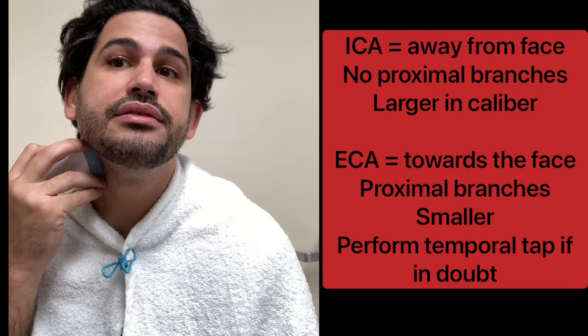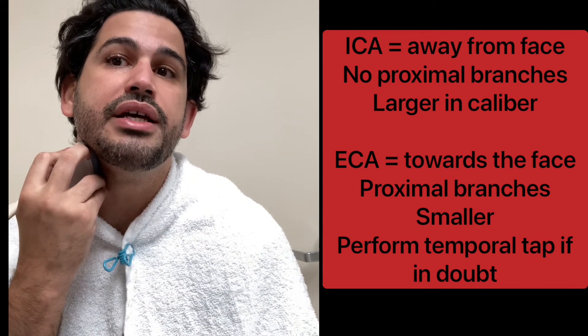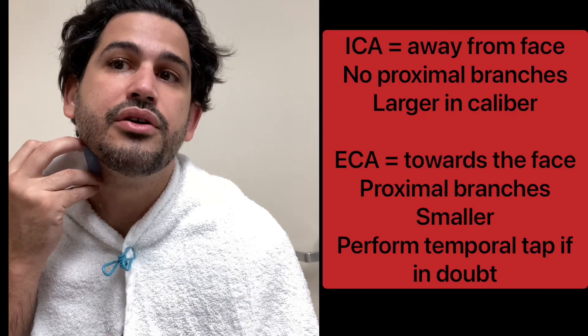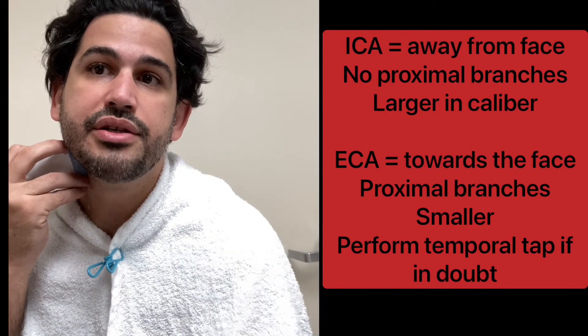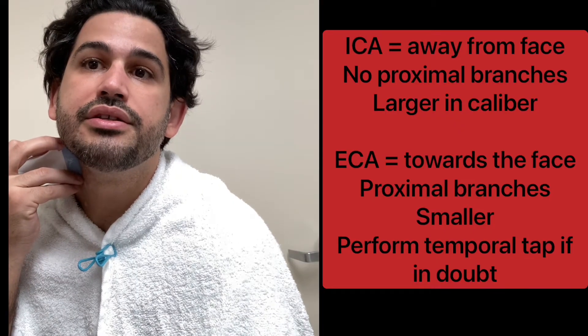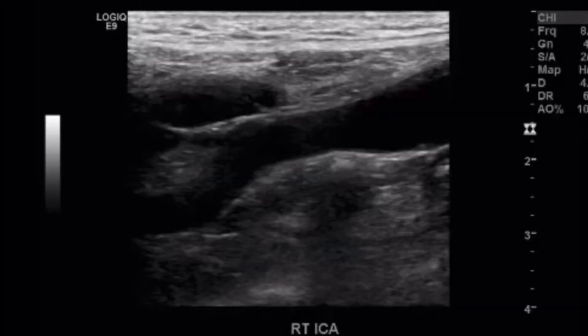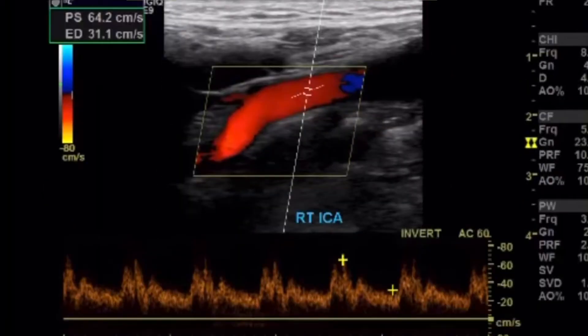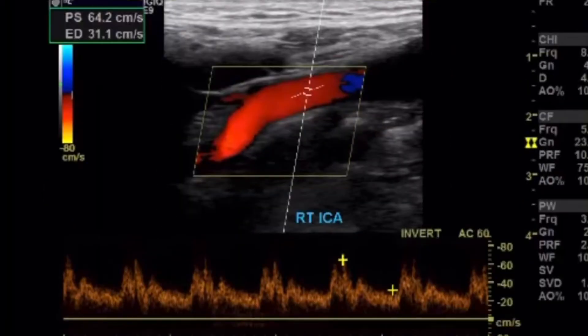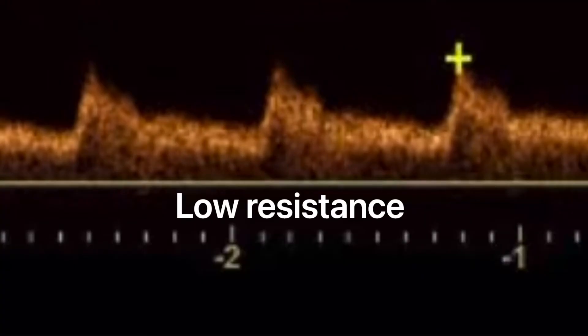Then ICA proximal. Always remember: towards the face is the ECA; away from the face is the ICA — that's one way to remember it. Also, the ICA has no proximal branches that you can see on ultrasound, and it's usually a little bit bigger in caliber than the ECA. Take your grayscale image there, color Doppler, and then spectral Doppler proximal. Measure peak systolic and end-diastolic velocity. You can see a nice spectral window — the ICA waveform is low resistance, so you're going to have a lot of diastolic flow.